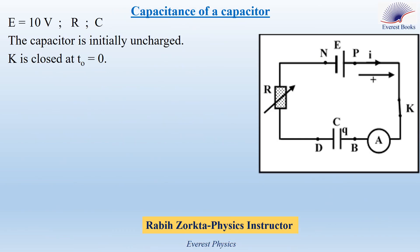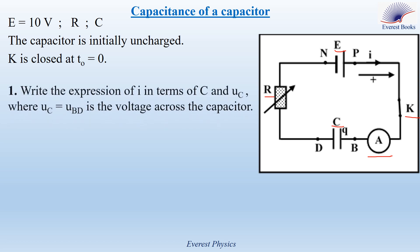The aim of this exercise is to determine the capacitance of a capacitor. We set up a series circuit that includes an ideal battery E of 10 volts, a rheostat of resistance R, a capacitor of capacitance C, an ammeter of negligible resistance, and a switch K. The capacitor is initially uncharged, and we close the switch at time zero.